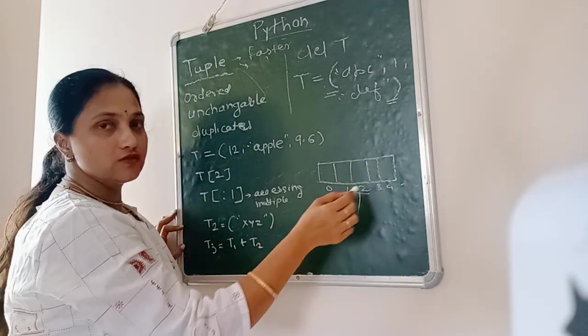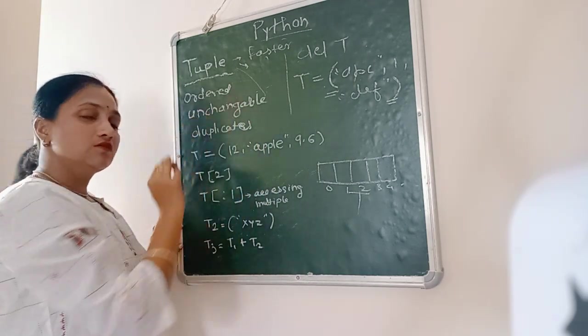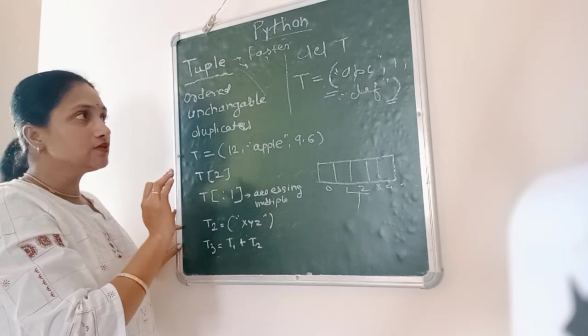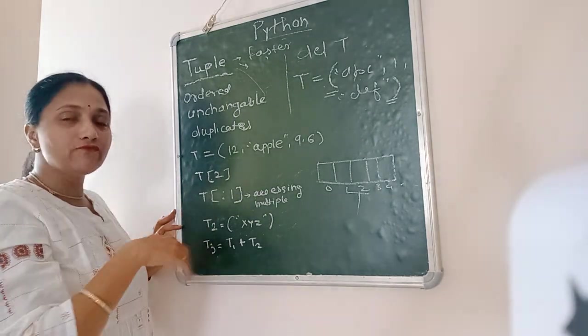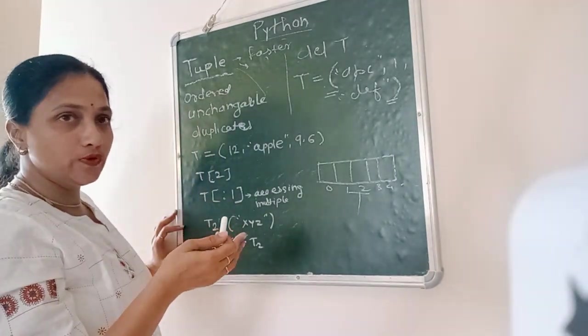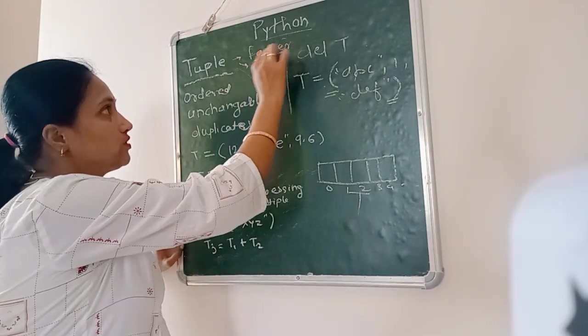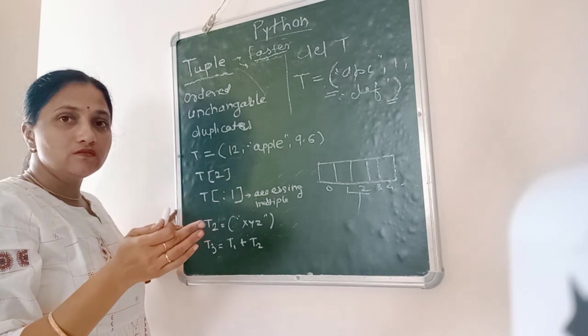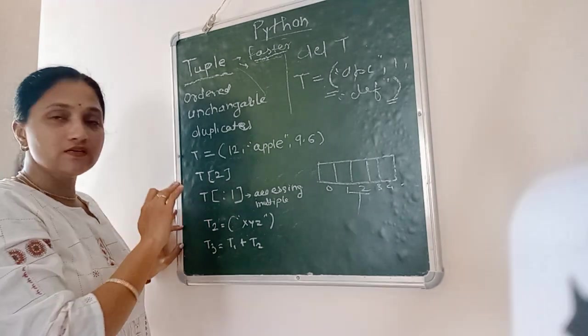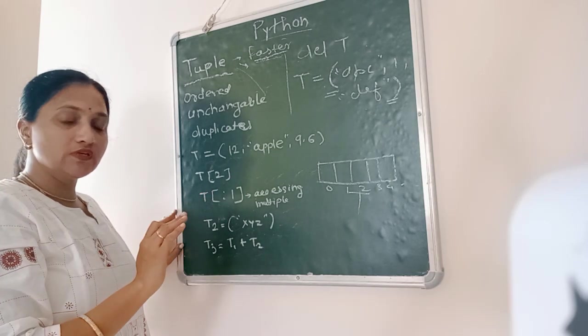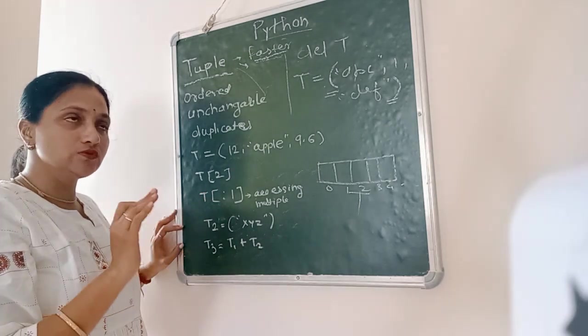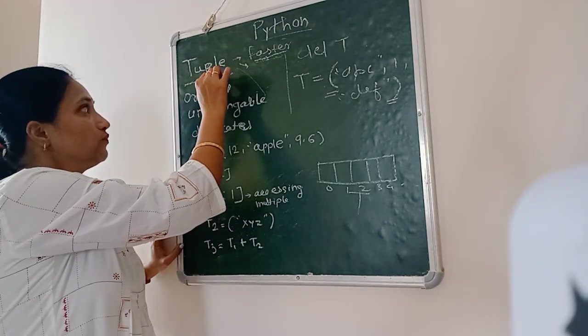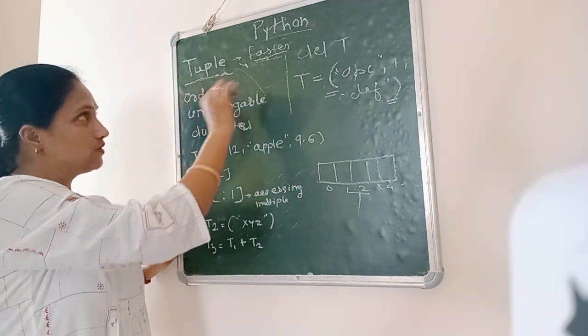Even though we have list, why do we use tuple? Tuple is used in conditions where we need faster access. When we want to perform faster operations, tuple is used because it is very faster than list. In some situations you have to apply the conditions like the data is never changed. The tuple once created, the contents are not changed. In some situations you don't want the contents to be changed by mistake. That time we use tuple. So once the tuple is created we cannot change the contents of tuple.